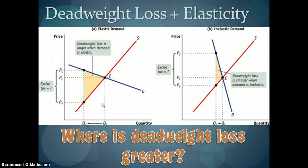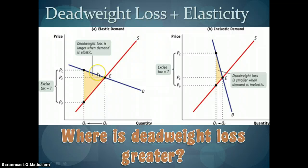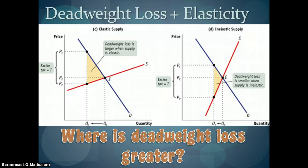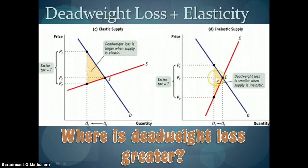Areas B and F are what we call deadweight loss — we lose those beneficial and efficient trades. The amount of deadweight loss depends in part on the elasticities of both demand and supply. Deadweight loss is relatively larger when supply and demand are more elastic. When demand becomes more inelastic, deadweight loss decreases because people are still purchasing these goods despite the rising price. The same is true with supply — if supply is relatively elastic, we have much greater deadweight loss than when supply is more inelastic. We'll spend more time in class looking at examples, so be sure to fill out the feedback form.